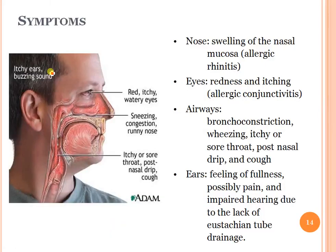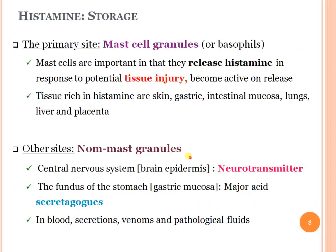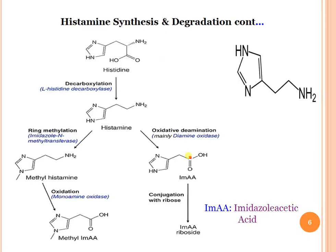Allergy symptoms include: nasal symptoms such as swelling of the nasal mucosa and allergic rhinitis; eye symptoms such as redness and itching — allergic conjunctivitis; airway symptoms such as bronchoconstriction; and ear symptoms such as peeling, fullness, possibly pain, and impaired hearing due to lack of Eustachian tube drainage. This covers histamine structure, chemistry, allergy types, histaminergic receptor types, and biosynthesis and degradation of histamine.